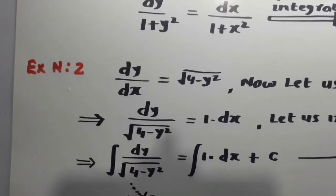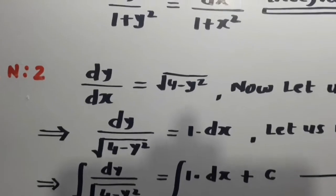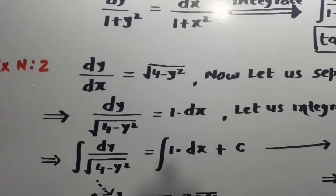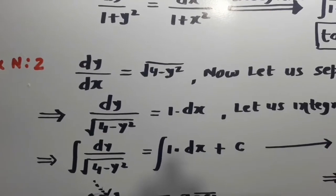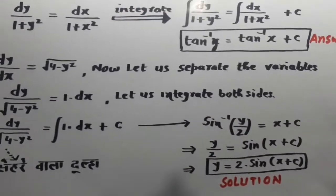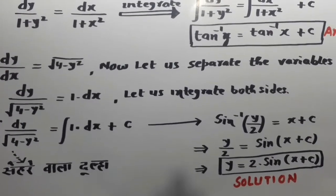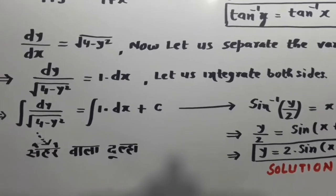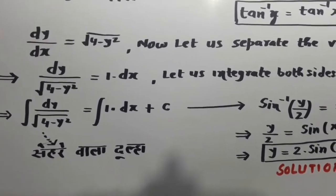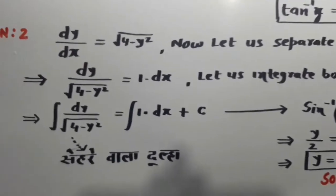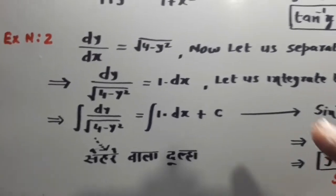Now, let us take another example. Example number two. dy/dx is equal to √(4-y²). Now, let us separate the variables. We have to ensure that dy and dx are always in the numerator. Now, I have separated this. Look here. dy is in the numerator. This is y. This will come this side. This is dx. This will go to this side.